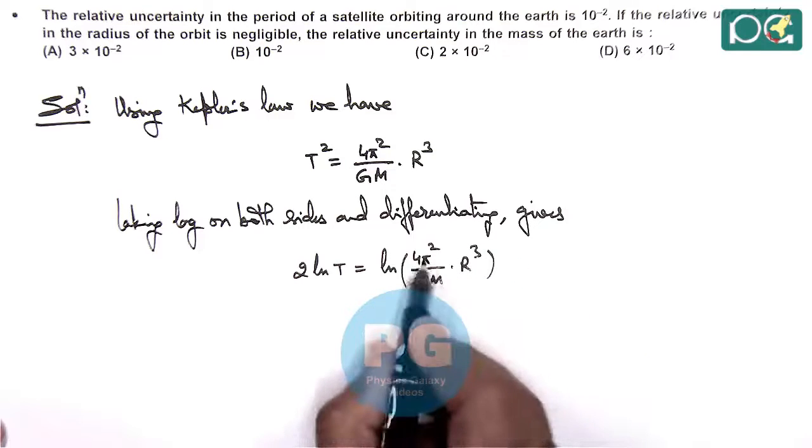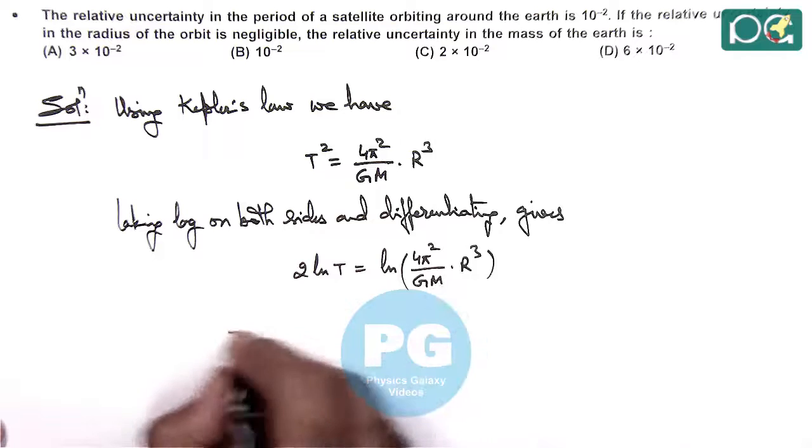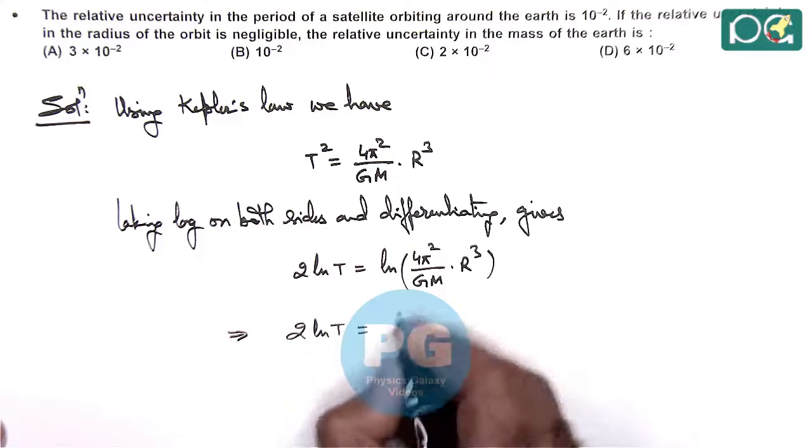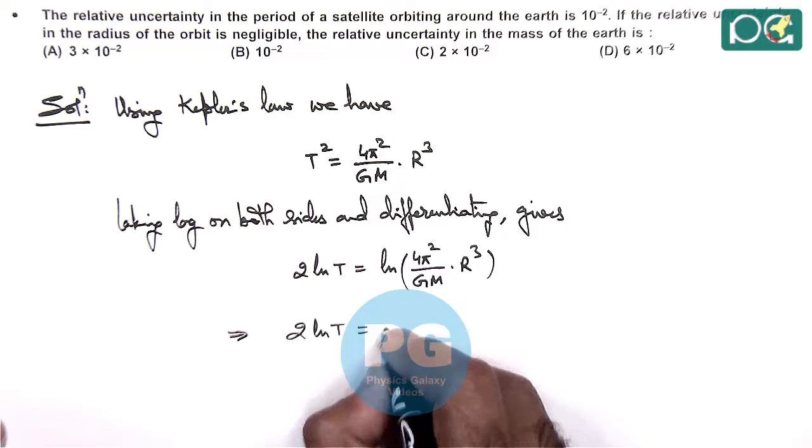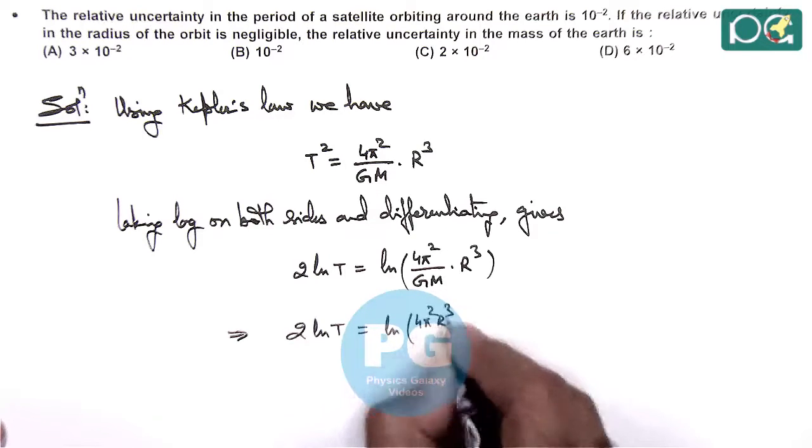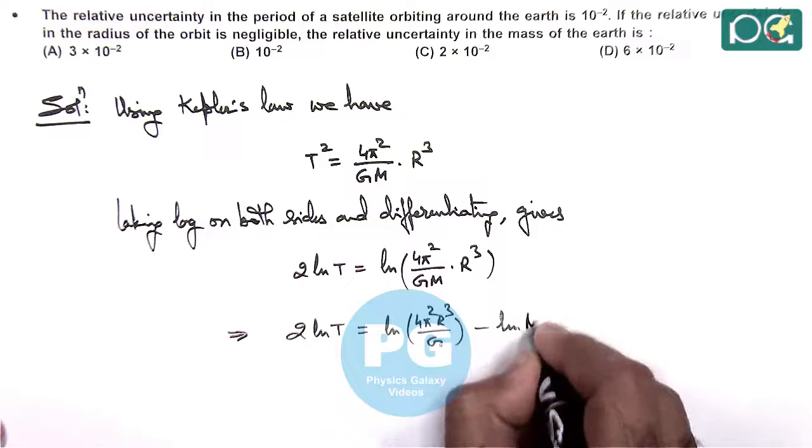Here, 4 pi square by G R cube we consider as constant, only we isolate the mass factor. So this giving us 2 ln T is equal to ln of 4 pi square R cube by G, minus ln of M.